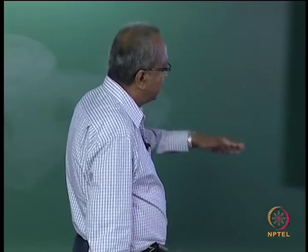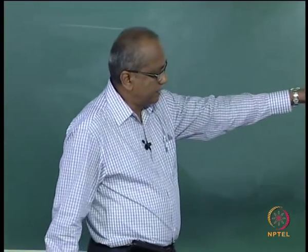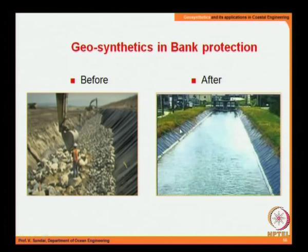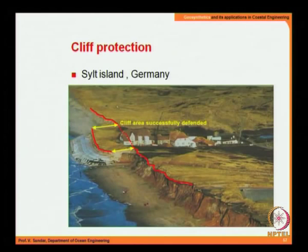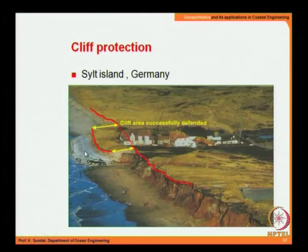Bank protection using geotextiles is also common. You can see the geotextiles already laid on the bank sides — the side has to be prepared with minimal undulations, as too much unevenness can lead to tearing of the geotextile over time. In the island of Sylt, a cliff is protected with geosynthetic materials, and this represents the kind of setback line considered for properties in that area.